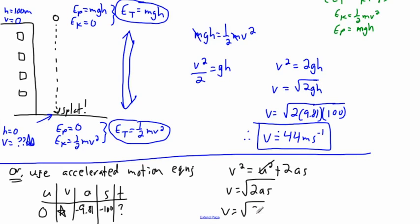The speed then is square root of 2 times 9.81, in this case negative, times negative 100. But negative something times negative something gives you a positive. And look, I'm doing the exact same thing. So I'll still get 44 meters per second.